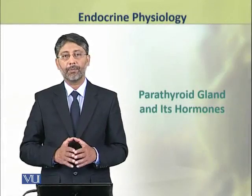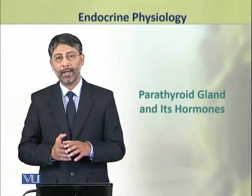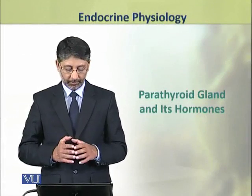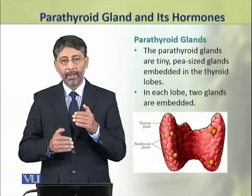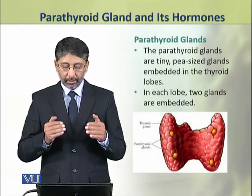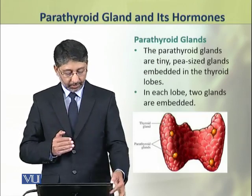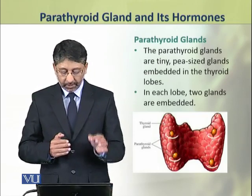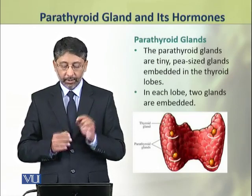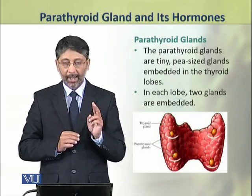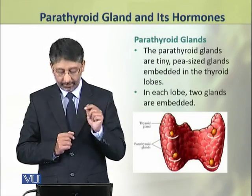Dear students, in this topic we shall discuss the parathyroid gland and its hormones. The parathyroid glands are tiny pea-sized glands which are embedded in the thyroid gland. Each lobe of the thyroid has two parathyroid glands embedded in it.